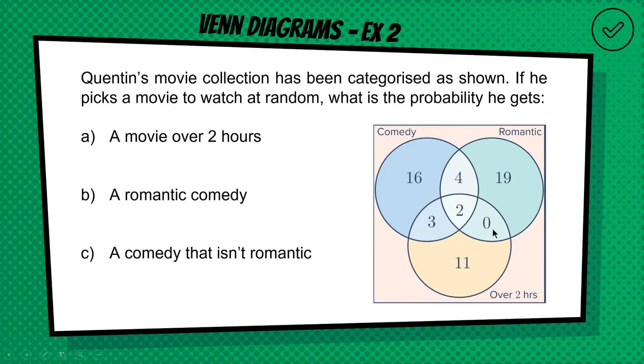Okay, for the next one we have a triple Venn diagram. We have three categories. This is comparing three types of genre or three pieces of information of movies in Quentin's movie collection. So he's got comedy movies here, he's got romantic movies in this circle, and he's got movies that are over two hours in this circle here. Okay, so this four here could represent a movie that is both romantic and comedy, whereas the thing in the middle here, the two, is in all three circles. So this would be a comedy movie that is romantic and over two hours. Okay, that's the idea.